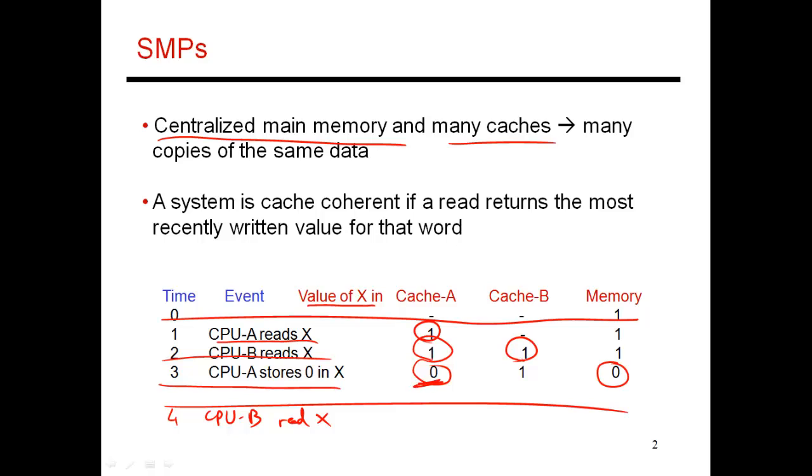When I do a write of 0 into A, I need to do a couple of things. I either need to make sure that cache B and memory get the value 0, or I need to make sure that these copies get somehow invalidated. If somebody else were to eventually do a read of x, it should return the value 0. This is what cache coherence is trying to provide. It's trying to make sure that when you do a write into a location, all subsequent reads to that location should return the new value and not the old value.